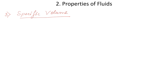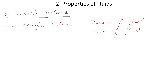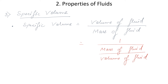The next property is specific volume, defined as the ratio of volume of fluid to mass of fluid. We can rewrite this as 1 divided by (mass of fluid / volume of fluid), so specific volume is the reciprocal of density: 1/ρ. Its unit is meter cube per kg.